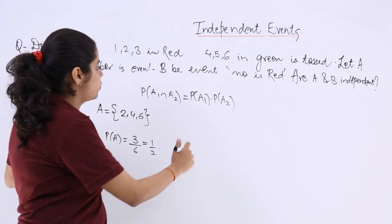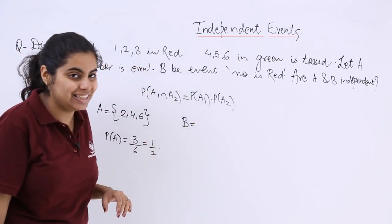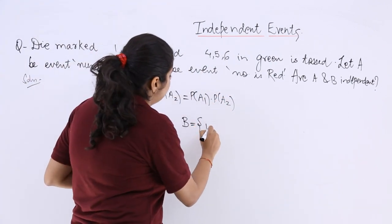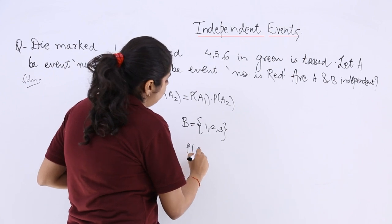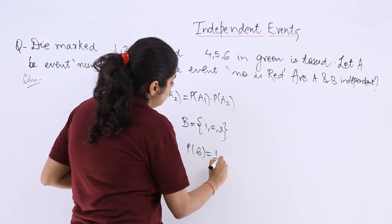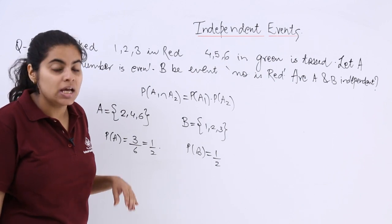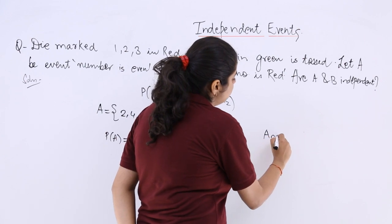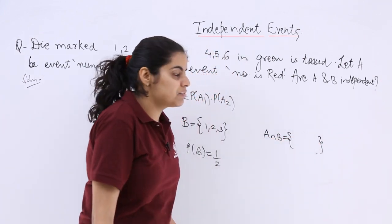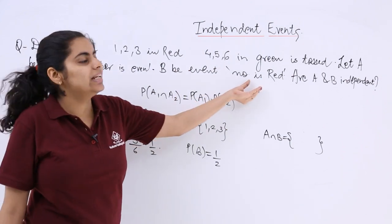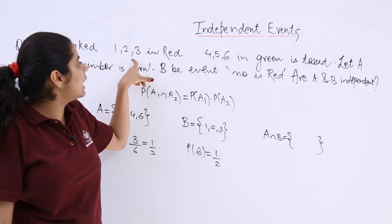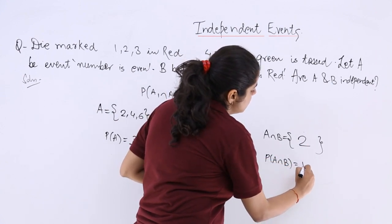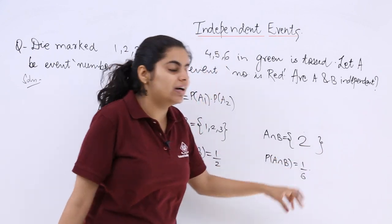For event B, the number is red. There are 3 numbers in red — 1, 2, and 3 — so P(B) equals 3 over 6, which is 1 over 2. Now for P(A∩B), we need the number that is both even and red. That number is only 2, so the probability of A∩B is 1 over 6.